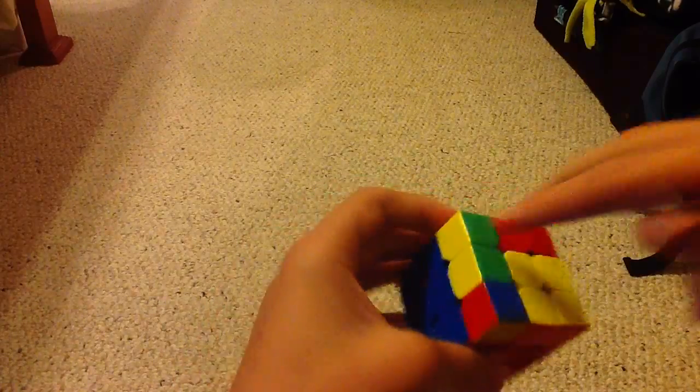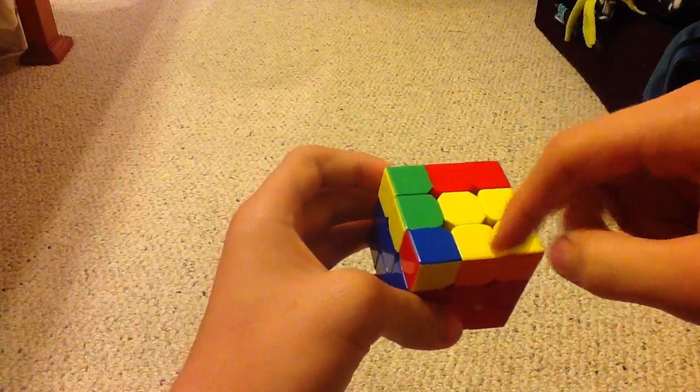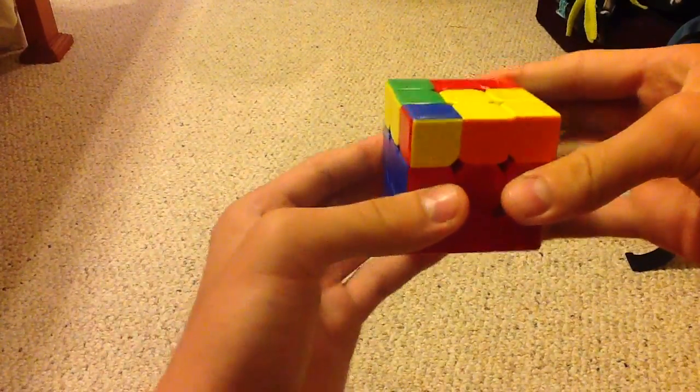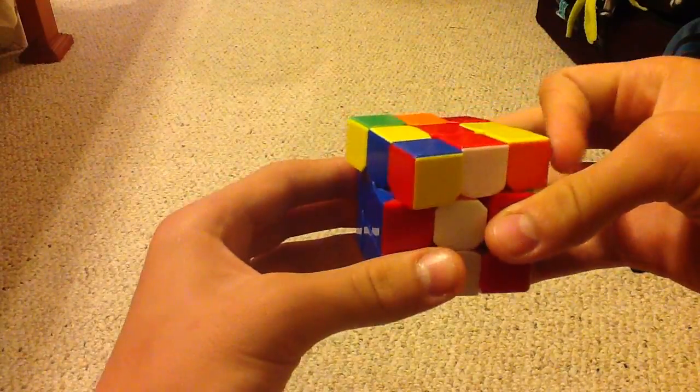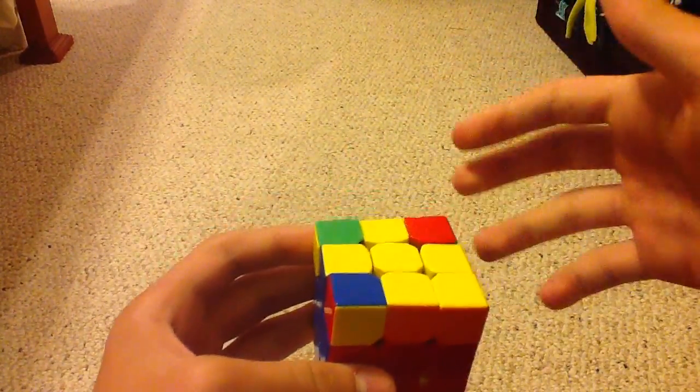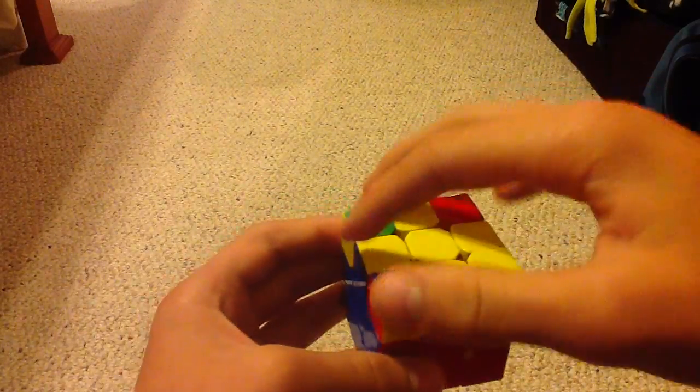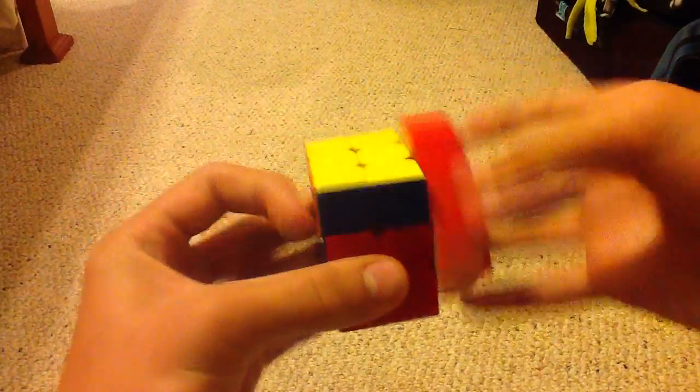Well, basically what this algorithm does is it orients these two edges while making all the corners the same orientation. So if you were to do the algorithm, which is M' U M U2 M' U M, it basically keeps the corners in the same orientation but orients these two. So I would get a better algorithm, like anti-sune, which is way faster.